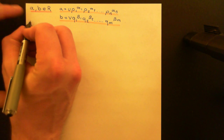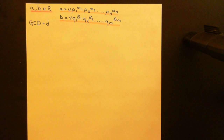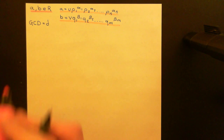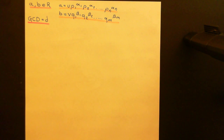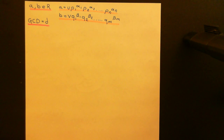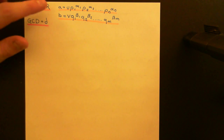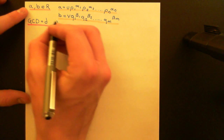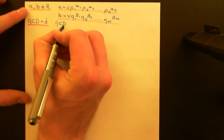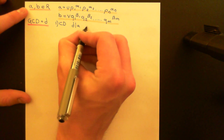We want to find the greatest common divisor — the GCD — and I will call the GCD little d here. The first thing we need to address is what common divisors of these two elements look like, and then we'll address what the greatest common divisor is going to look like. A common divisor of A and B is something that must divide both A and B. The greatest common divisor absolutely has to be a common divisor firstly.